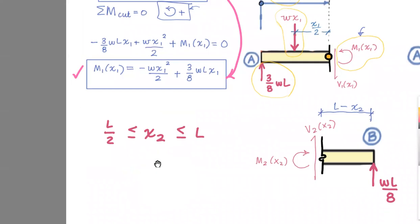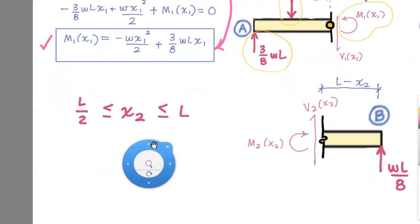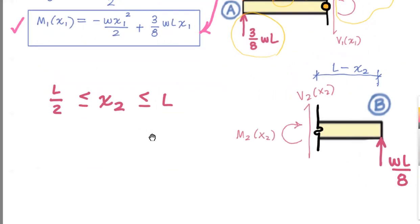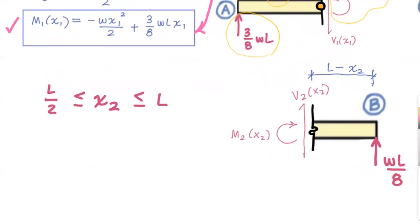Imagine that axis coming out of the screen, that z axis. Tendency to rotate about that axis is what we want to do. We set up our equation. Summation of moments about the cut is equal to zero.